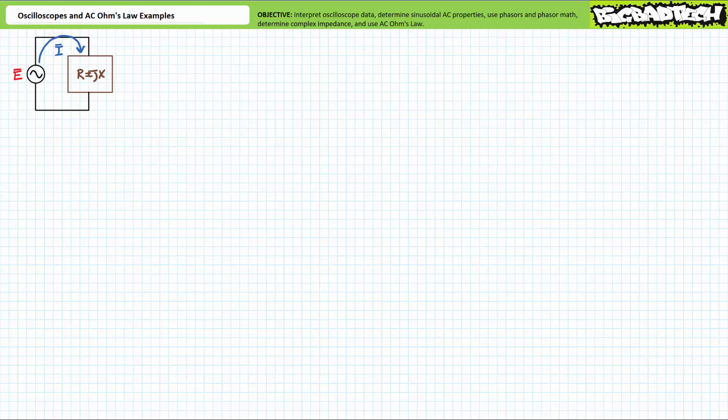Let me begin this lecture with this unambiguous, non-negotiable statement certain to motivate your active participation: you cannot pass this class until you can reliably, confidently, and repetitively perform these skills with no outside assistance. As an instructor, I often inherit students from other schools or other instructors, and before allowing them into a particular class, I put them through a series of basic interview questions to see if their previous experience qualifies them for inclusion.